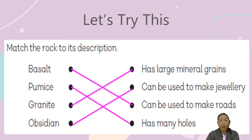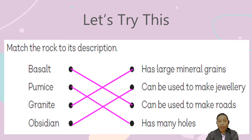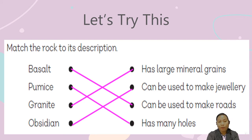Don't forget these four kinds of igneous rocks. We know there are two groups: the intrusive and extrusive igneous rocks. The extrusive comes from lava, and the intrusive comes from magma.